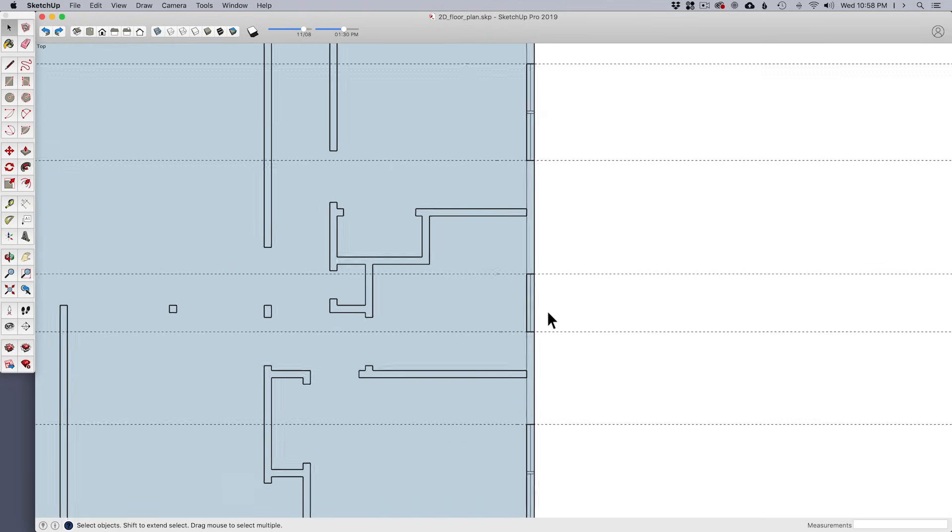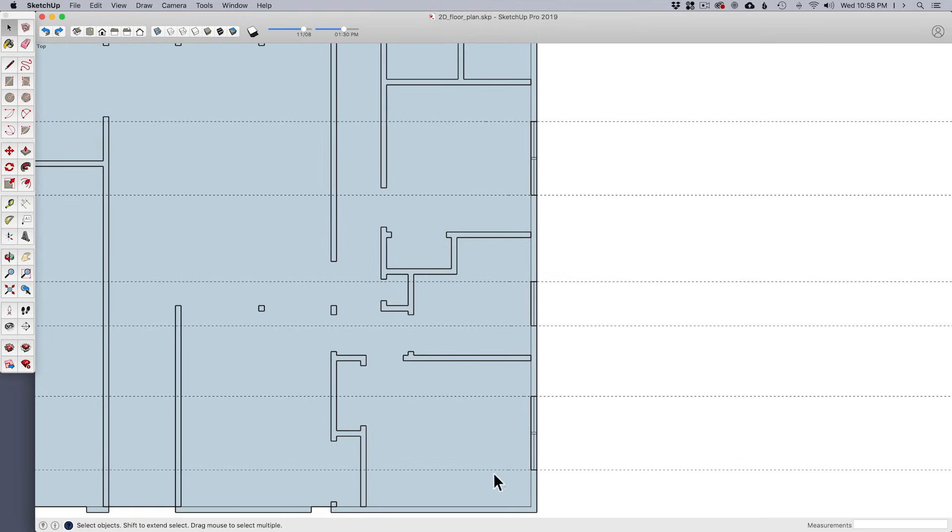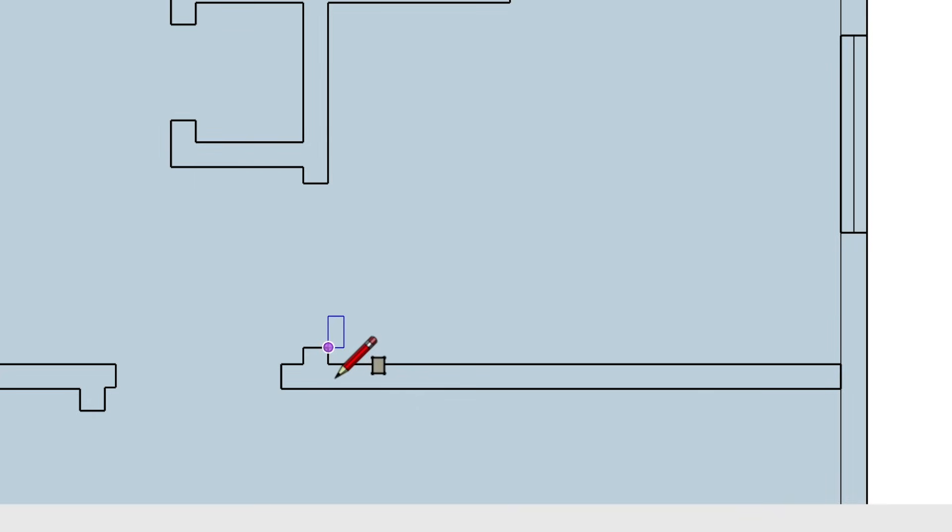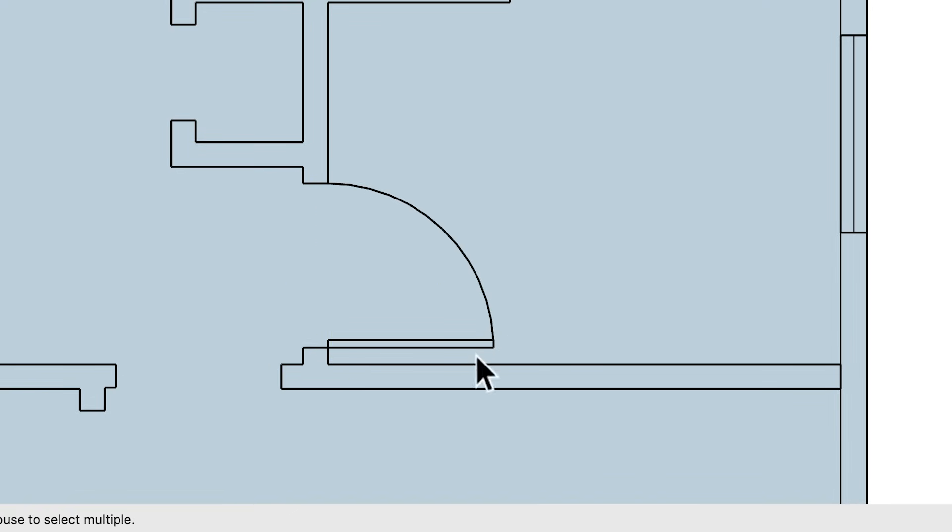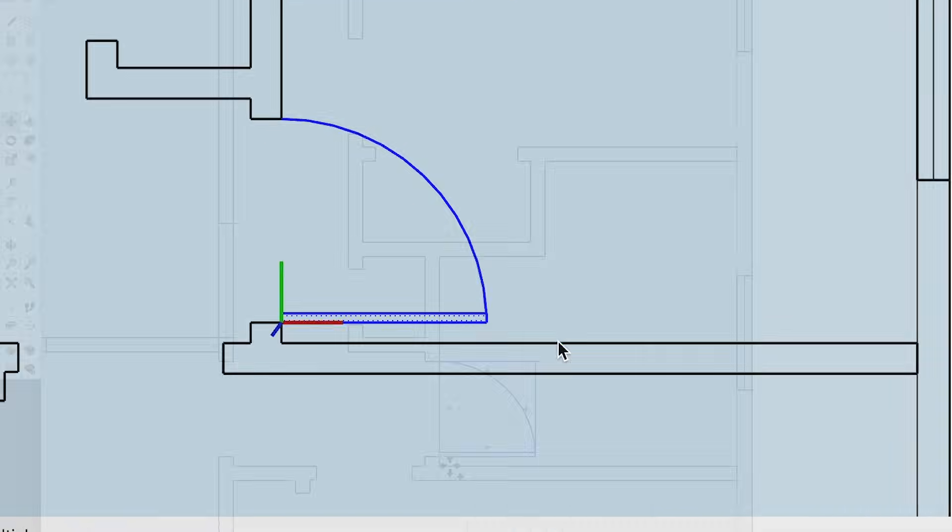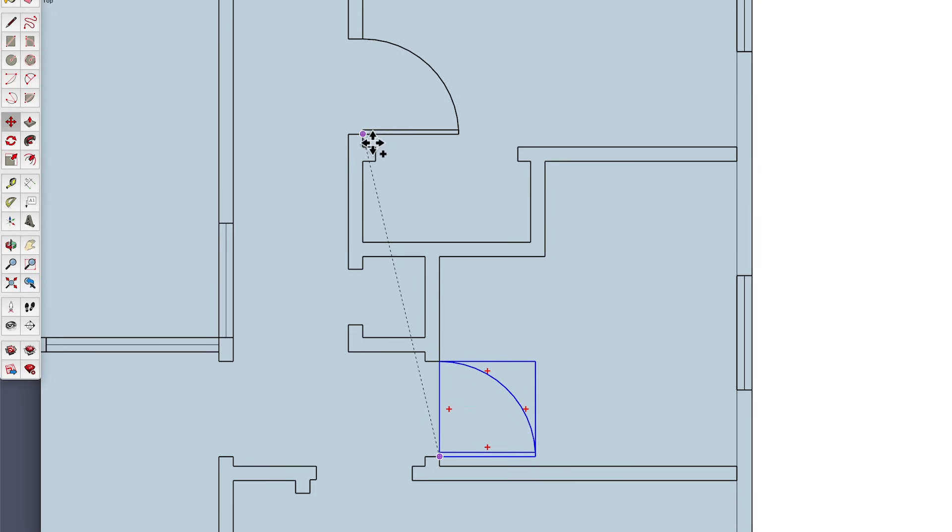Because you made it unique from the original component, the changes you make to it won't update the other instances of the component. Okay, next up. You can use the same process I just described to create the doors. First, draw a rectangle with the correct width and thickness. Then use the Arc tool to draw the swing. Make it into a component and use the Move tool to copy it around the model.